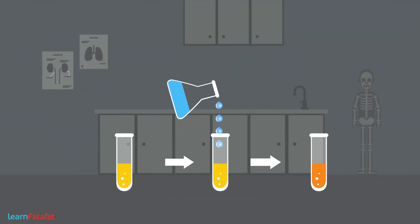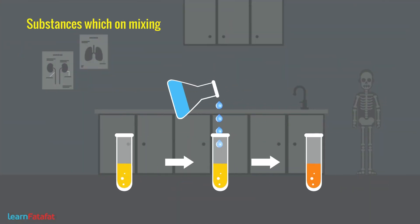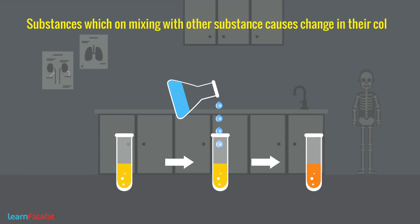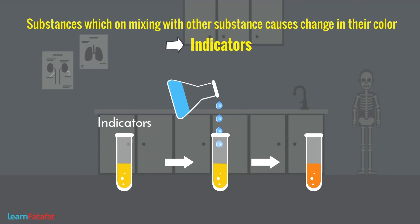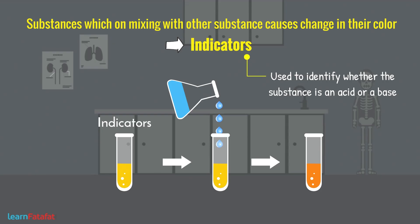But we have a solution. There are certain substances which, on mixing with other substances, cause a change in colour. These are called indicators, and they are used to identify whether a substance is acidic or basic.